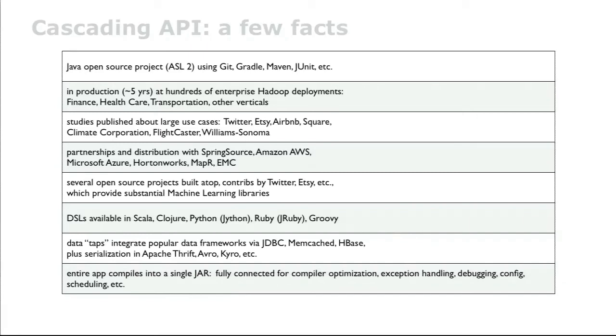We have partnerships with Spring, as well as with Amazon, with Microsoft for Hadoop on Azure. We also have distribution partnerships with Hortonworks, MapR, and EMC. In addition to our open source project, there are several others built on top of it. Several integrations and DSLs. Twitter has been the biggest. Twitter acquired two different firms doing that, plus they have their own in-house project. So now they've got three major projects on top of us.